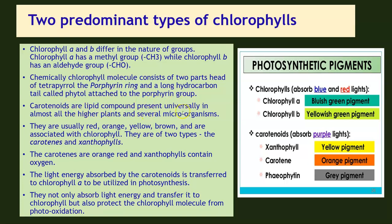Carotenoids are lipid compounds present universally in almost all higher plants and several microorganisms. They are usually red, orange, yellow, or brown, and are associated with chlorophyll. There are two types of carotenoids: carotenes and xanthophylls. Carotenes are orange-red, while xanthophylls contain oxygen. The light energy absorbed by carotenoids is transferred to chlorophyll A to be utilized in photosynthesis. Carotenoids found mainly in higher plants absorb primarily in the violet-to-blue region of the spectrum. They not only absorb light energy and transfer it to chlorophyll, but also protect the chlorophyll molecule from photo-oxidation.